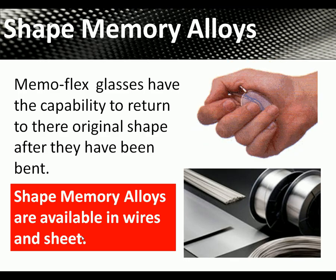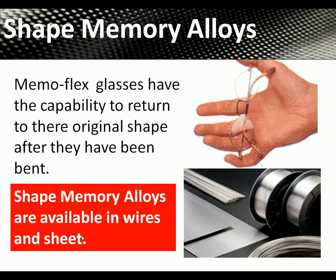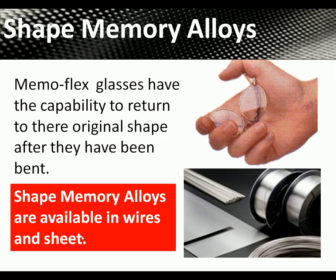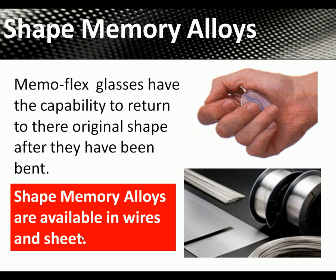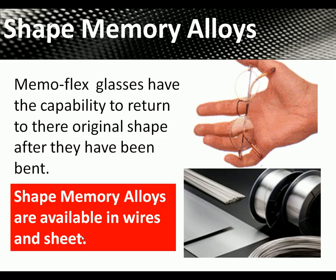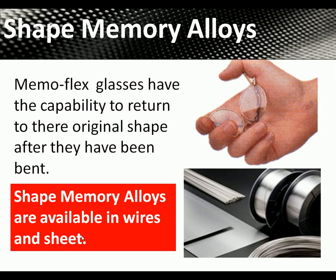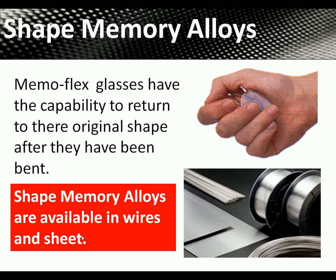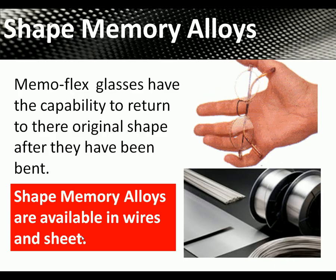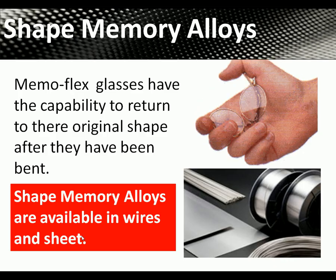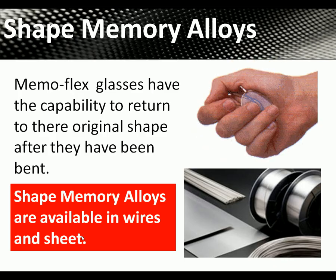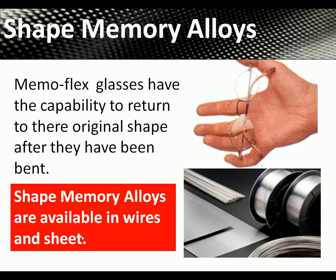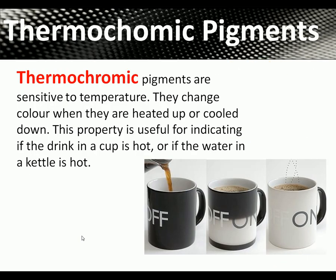These Memofrax glasses have the capability to return to their original shape after being bent. Shape memory alloy is available in different materials and is used in glasses that spring back to shape. Next, thermochromic pigments are paints or pigments that are sensitive to temperature — when heated up or cooled down, their color changes.